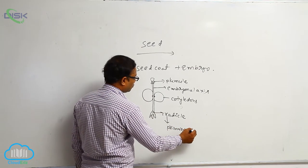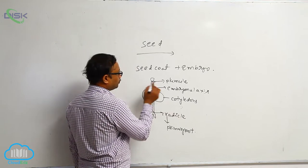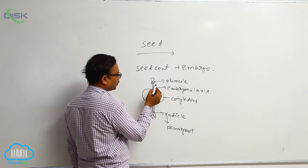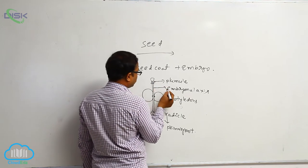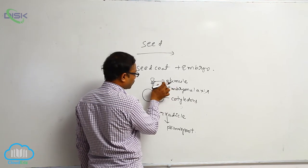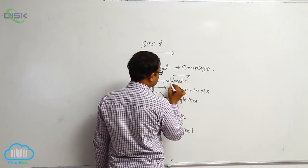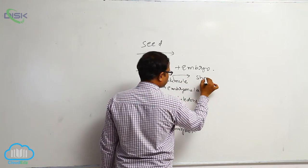It converts to the primary root. The plumule, at the time of seed germination, what is the meaning of plumule? Above part of the embryonal axis is known as the plumule. This plumule converts into the shoot system.